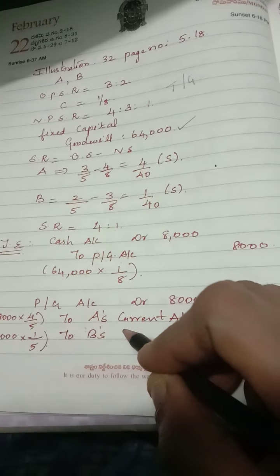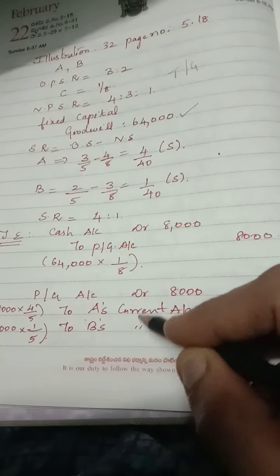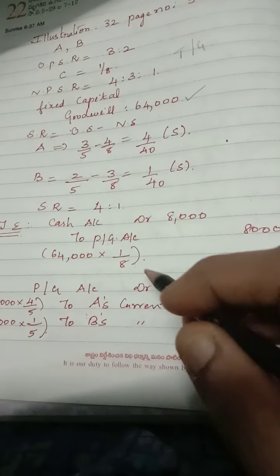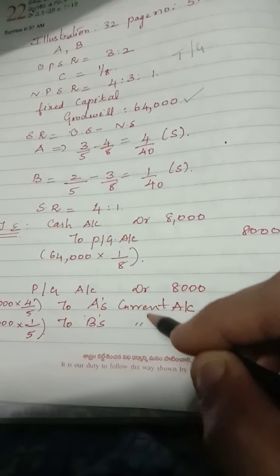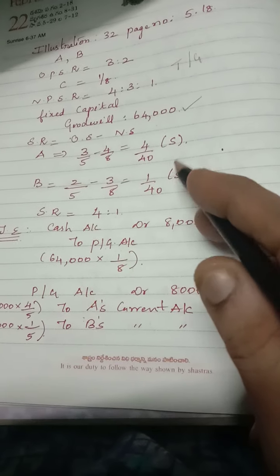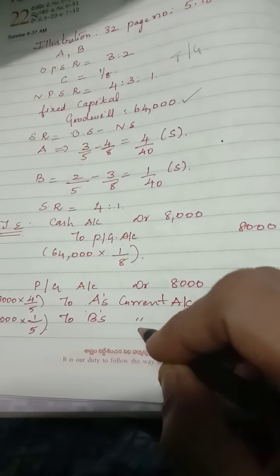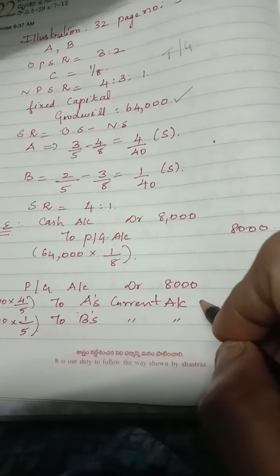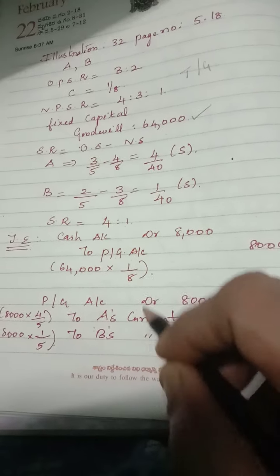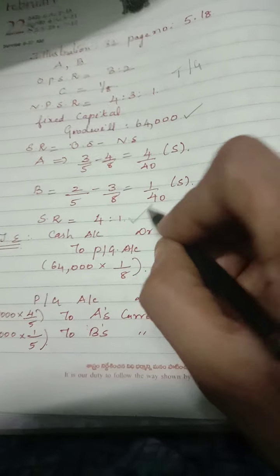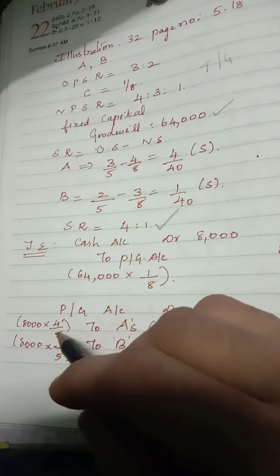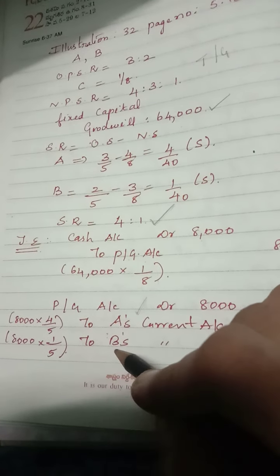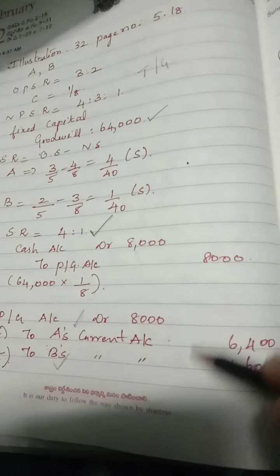For the second entry, this premium for goodwill is to be transferred to the sacrificing partners A and B. Since capital are fixed, we use the current account. We transfer in the sacrificing ratio: 8,000 × 4/5 for A and 8,000 × 1/5 for B. It is a very simple sum.